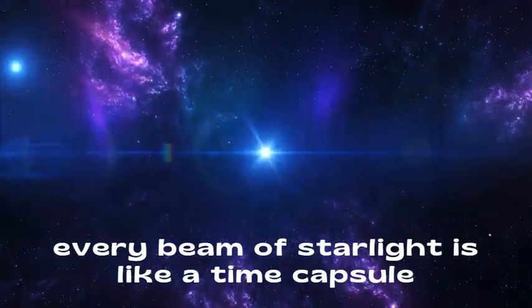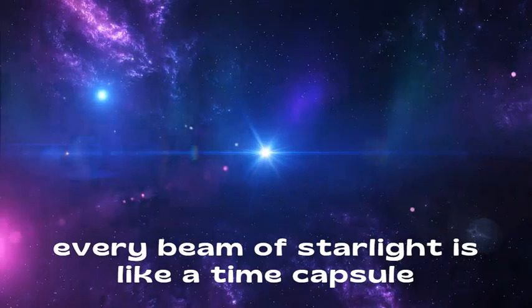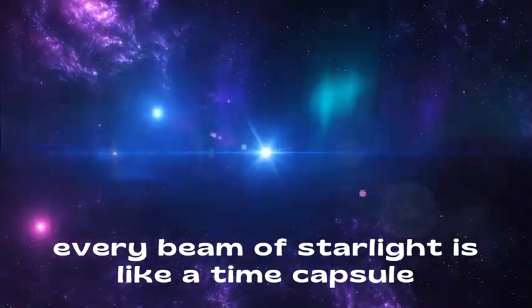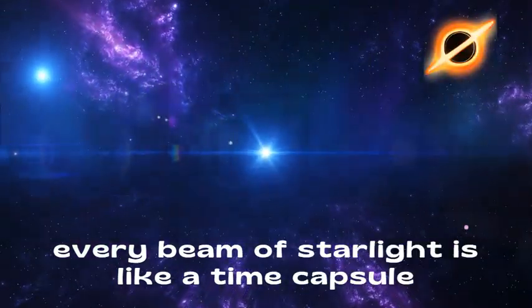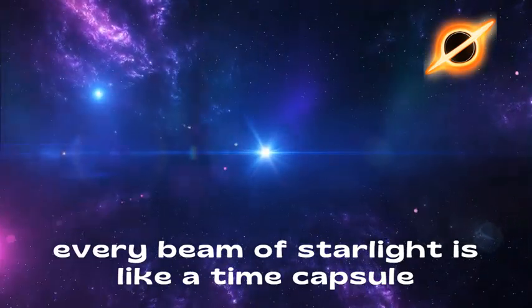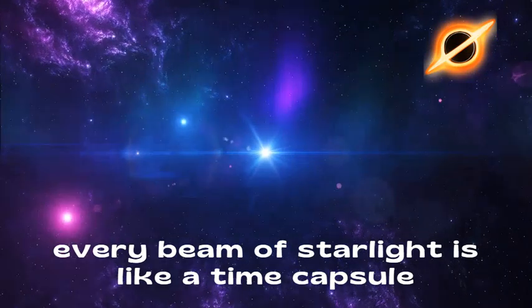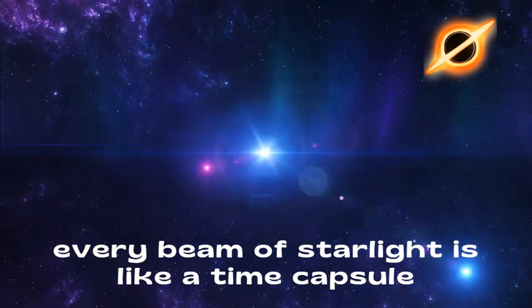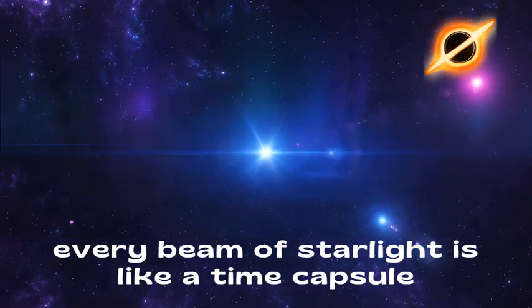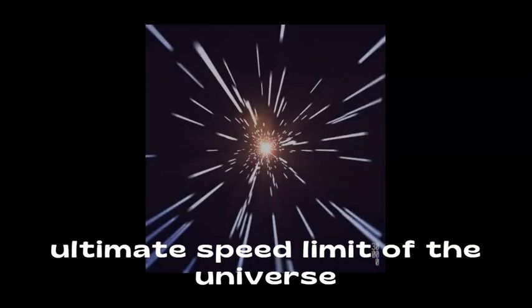The light we see from distant stars and galaxies began its journey millions or even billions of years ago. This means that every beam of starlight is like a time capsule, carrying with it a snapshot of what the universe looked like when the light first started traveling. Without light's endless journey, we would not be able to study the origins of the cosmos or understand the evolution of galaxies, stars, and planets. Einstein's theory of relativity tells us that information cannot travel faster than light. This sets the speed of light as the ultimate speed limit of the universe, ensuring that events unfold in a logical, orderly sequence.